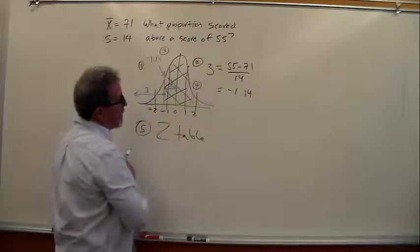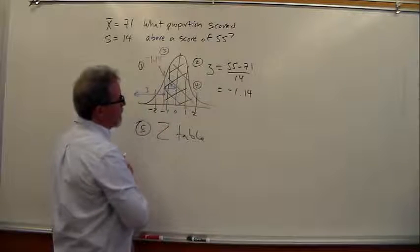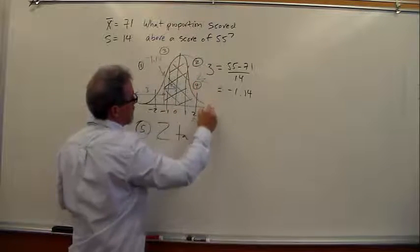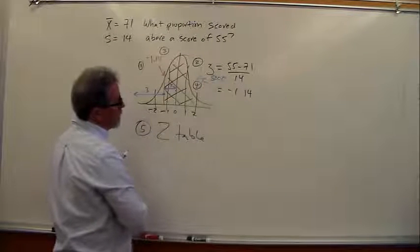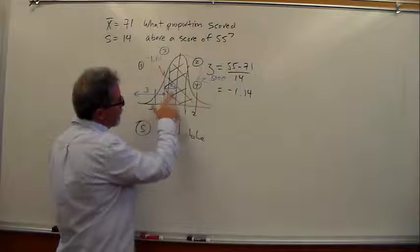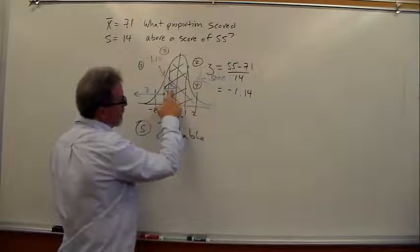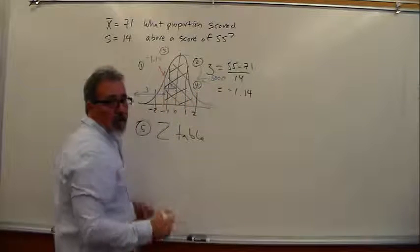So we can't get the entire amount of proportion just from the z-table. We have to do some addition of this area right here. But the good news is we know that this area right here is half the graph, so that's 0.500. So if we go to the z-table, look for 1.14, find the column 2 value here, we can add it to 0.500 and that will get us our answer.